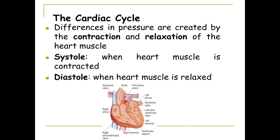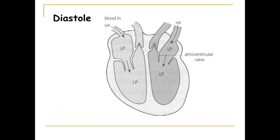There are different stages: systole and diastole. Systole is where the heart muscle is contracting — so you have atrial systole, where the atria are contracting, and ventricular systole, where the ventricles are contracting. Diastole is where the heart muscles relax; both the atria and the ventricles relax at the same time.